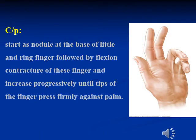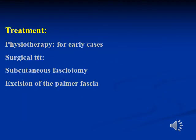The clinical picture starts as a nodule at the base of both the little and ring fingers, followed by flexor contracture of these fingers that increases progressively until the tips of the fingers press firmly against the palm. Treatment options include physiotherapy for early cases, or surgical treatment in the form of subcutaneous fasciotomy or excision of the palmar fascia.